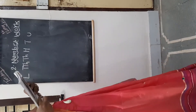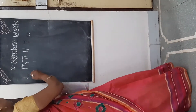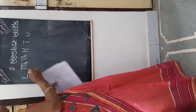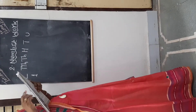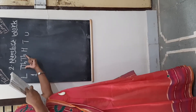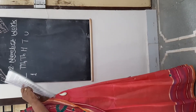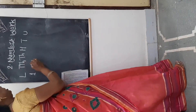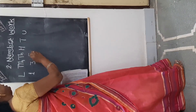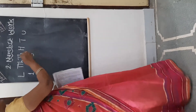Now read the number again: 1 lakh. So write 1 at the lakh place. Then think about the 1000 place — 1000 and 10,000 always go together. So 35,000: 3 comes at the 10,000 place and 5 comes at the 1000 place.